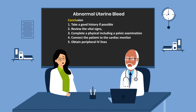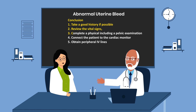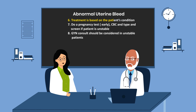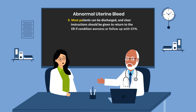In conclusion: take a good history, review the vitals to ensure the patient is stable, complete a physical exam including a pelvic examination with a chaperone, and ensure IV access and cardiac monitoring are secured. Treatment is based on the patient's condition. Perform a pregnancy test early. CBC and type and screen should be done for unstable patients. A GYN consult should be considered in unstable patients. Most patients can be discharged with clear instructions to return if their condition worsens or to follow up with GYN.